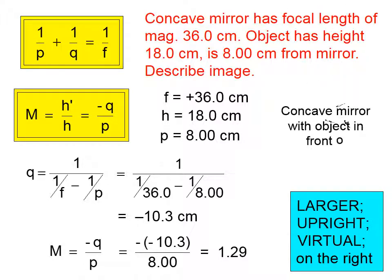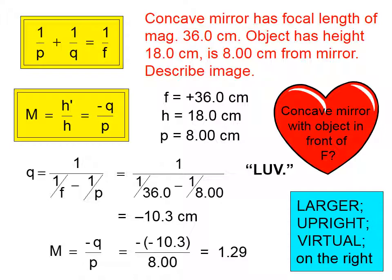Any time you have a concave mirror with the object in front of f, which is what we have here, that's true LOV there: larger, upright, virtual.